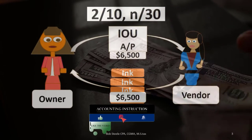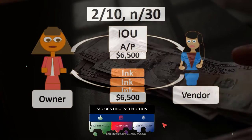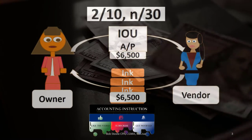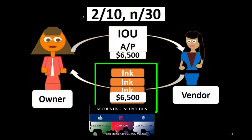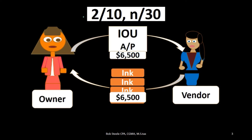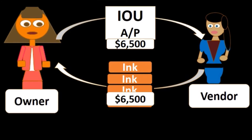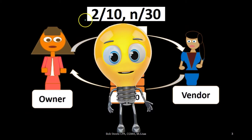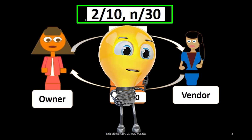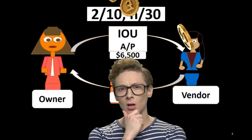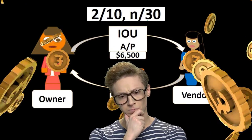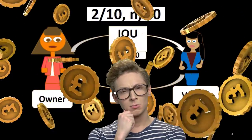For example, we're purchasing inventory — ink in this case — costing $6,500. We have terms from the vendor: 2% discount if we pay within 10 days, otherwise we pay within 30 days. If we didn't have this 2% discount, we would probably try to pay within the 30 days in order to pay as late as possible because of the time value of money.